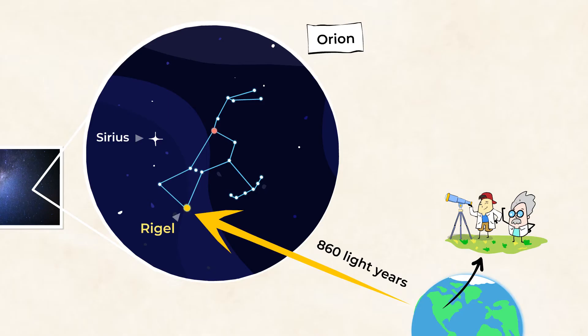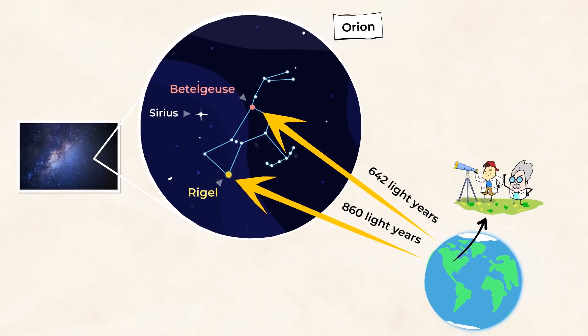Although brighter and larger, it appears smaller and dimmer to us here on Earth. Betelgeuse is a reddish star and another bright star in our night sky. It's the second brightest in the constellation of Orion. This star is one of the largest stars that we've discovered. Like Rigel and Sirius, Betelgeuse is much larger than the sun and much hotter. This star is about 642 light years away from Earth. So, once again, although bigger and brighter, it appears to be smaller and dimmer from our view here on Earth.